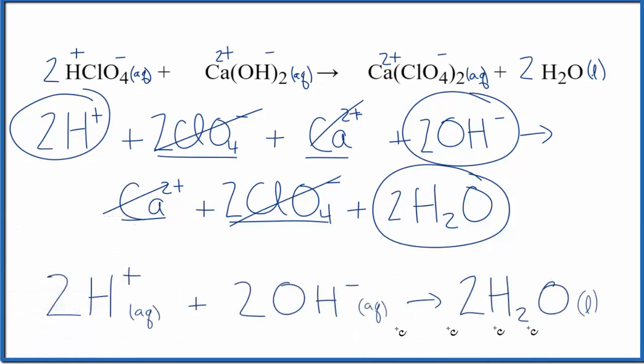And this is the net ionic equation for HClO4 plus Ca(OH)2, perchloric acid plus calcium hydroxide.